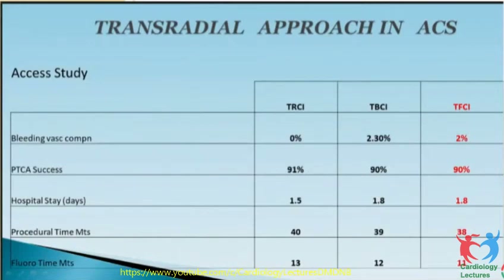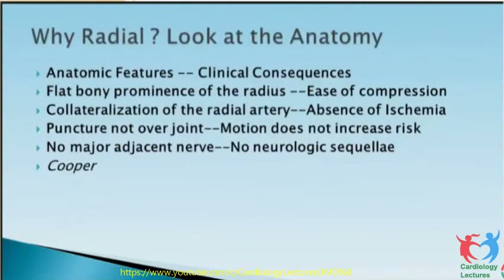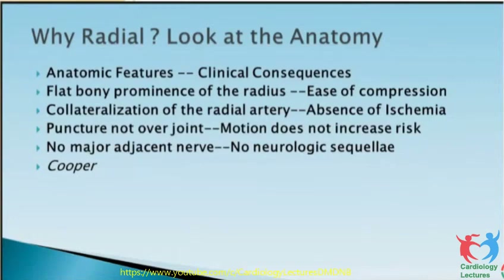Fluoroscopy times are comparable. Why radial? Look at the anatomy. The flared bony prominence of the radius makes it easy to compress when removing the sheath. Collateralization of the radial artery via the superficial and deep palmar arch means less possibility of ischemia if the radial is occluded. Surgeons use the left radial with no ischemia, but there is about one percent radial occlusion risk with multiple punctures, large sheaths, and size mismatch.